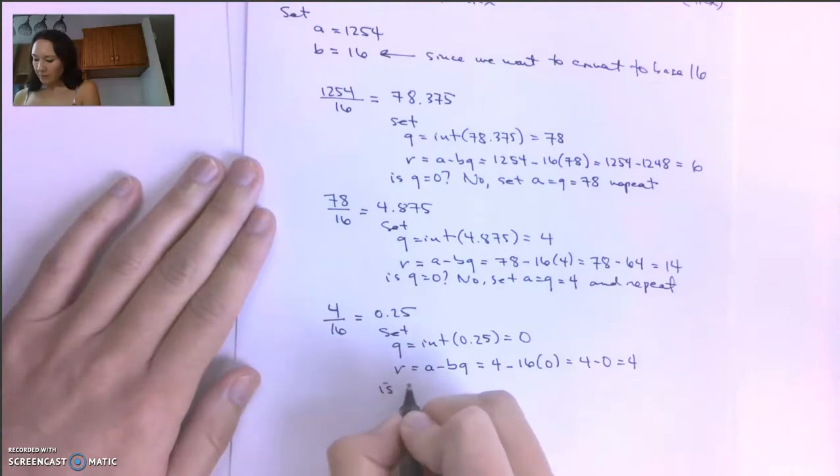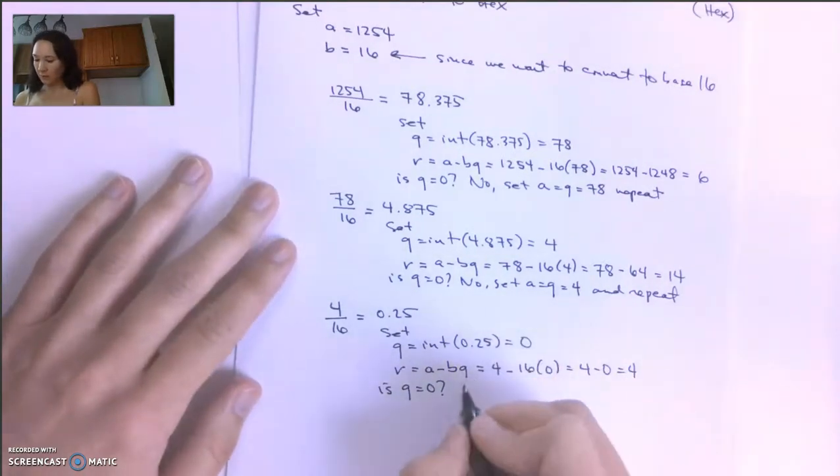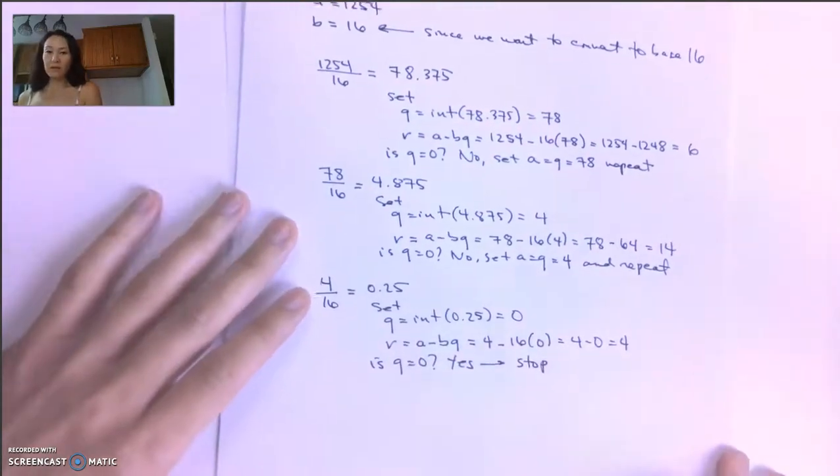And now we ask, is Q equal to 0? Q is indeed equal to 0, so the answer is yes. That means we stop our iterative algorithm.